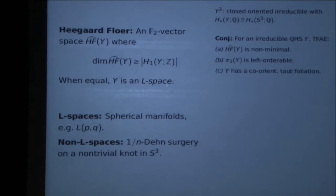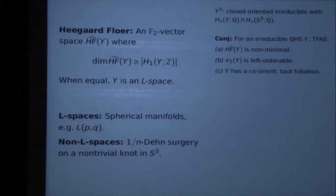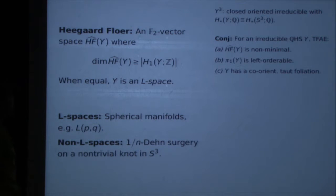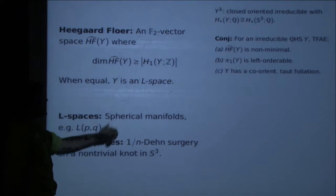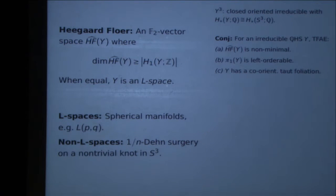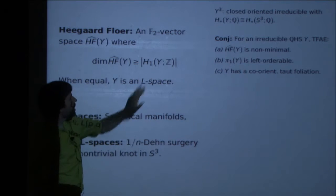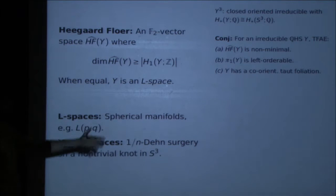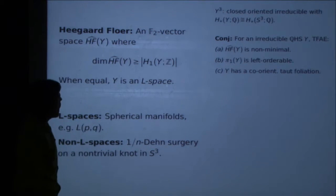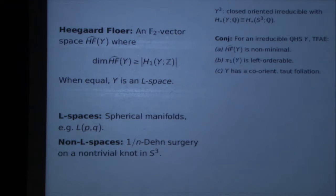For today's talk, the Heegaard Floer homology, introduced by Ozsváth and Szabó, will essentially be a black box. The only thing you really need to know about it is that this is the hat variant, the simplest variant — it's a vector space over the field with two elements — and it has the property that the dimension of this vector space is always at least the size of the first homology of my rational homology sphere Y. So this is just some finite abelian group, and you have this lower bound.